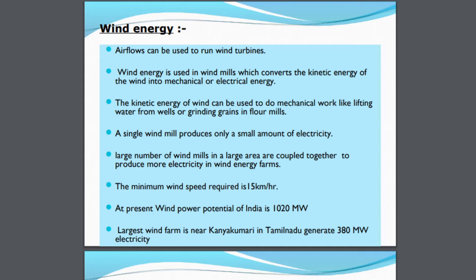A single windmill can produce only very small electricity, that is why you have a series of windmills in a row. This entire area where we set up such windmills is known as a wind farm. Large numbers of windmills in a large area are coupled together to produce more electricity. We have such farms in Jaisalmer, in Gujarat and in some parts of South India. The minimum wind speed required is 15 km per hour to propel and rotate the blades. In India at present the wind power potential is around 1020 MW and the largest wind farm is near Kanyakumari in Tamil Nadu, which generates around 380 MW of electricity.